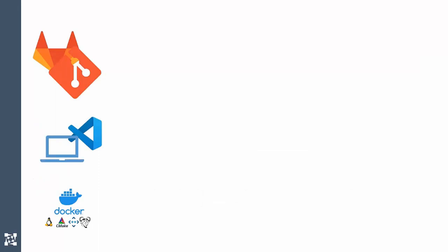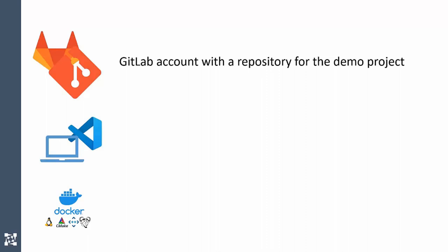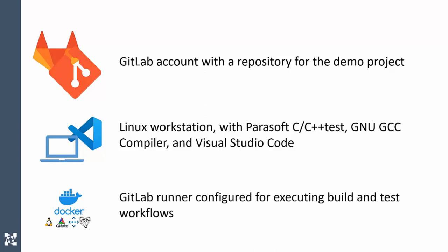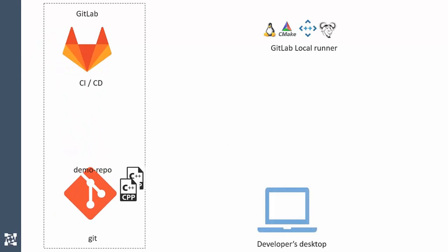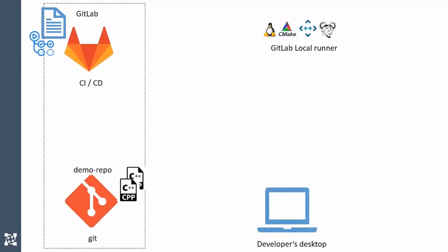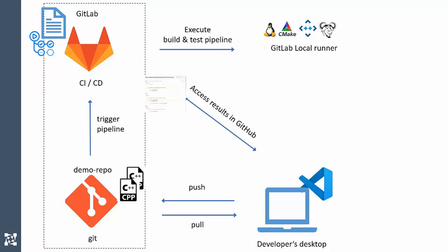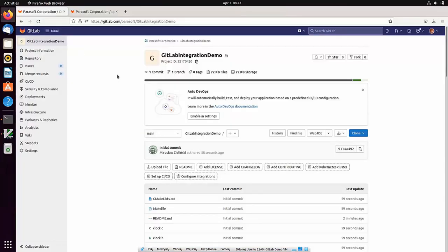For the demonstration, I will use a GitLab account with a repository for the demo project, a Linux workstation with Parasoft C++ test, GNU GCC compiler, and Visual Studio Code editor as a development host, and a GitLab runner for executing the pipelines. We'll go through: defining a GitLab pipeline with C++ test static analysis, simulating a developer pulling code from the repository, modifying it, and pushing to GitLab. The push operation will trigger the pipeline, launching C++ test to perform static analysis. I will now switch to my development machine and open the browser with my GitLab account and demo project — this is a timer example shipped with C++ test.